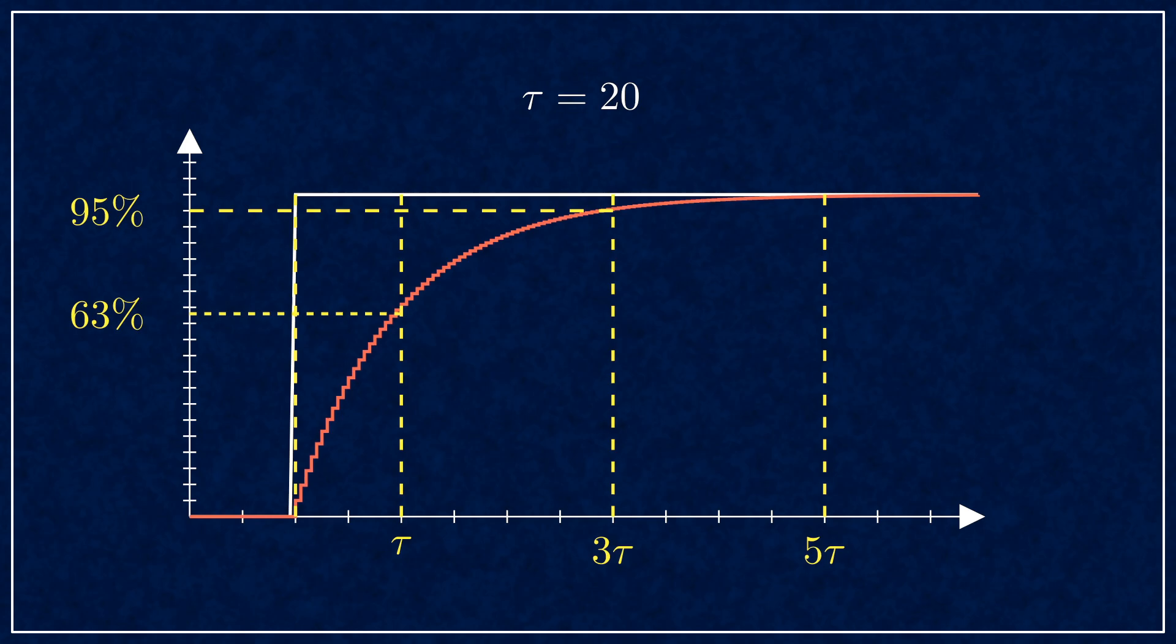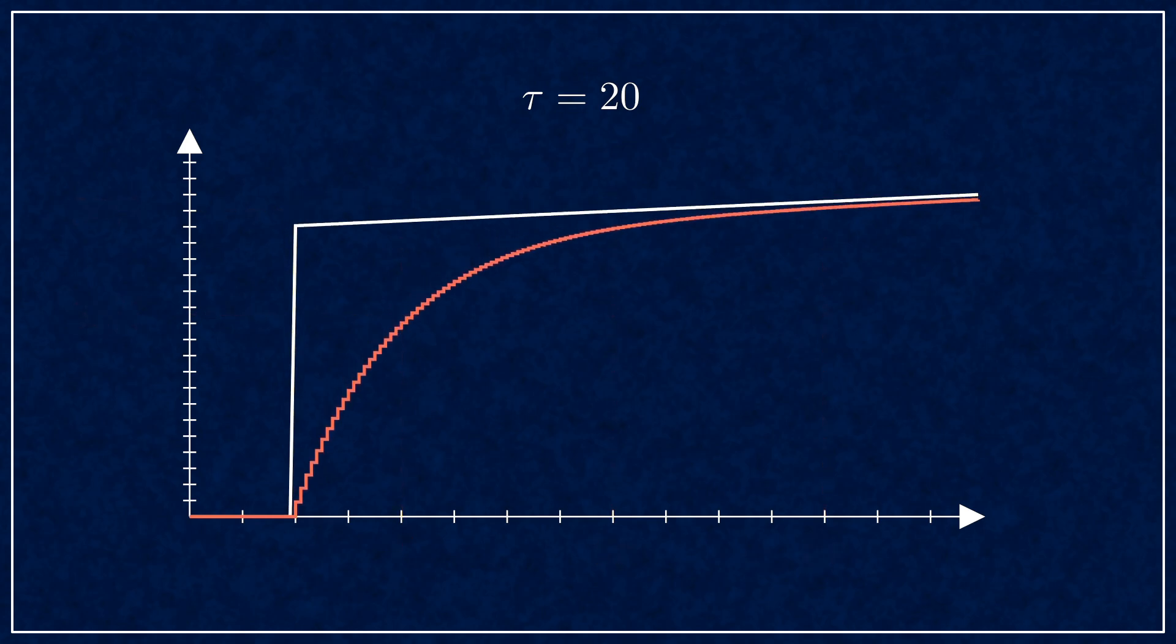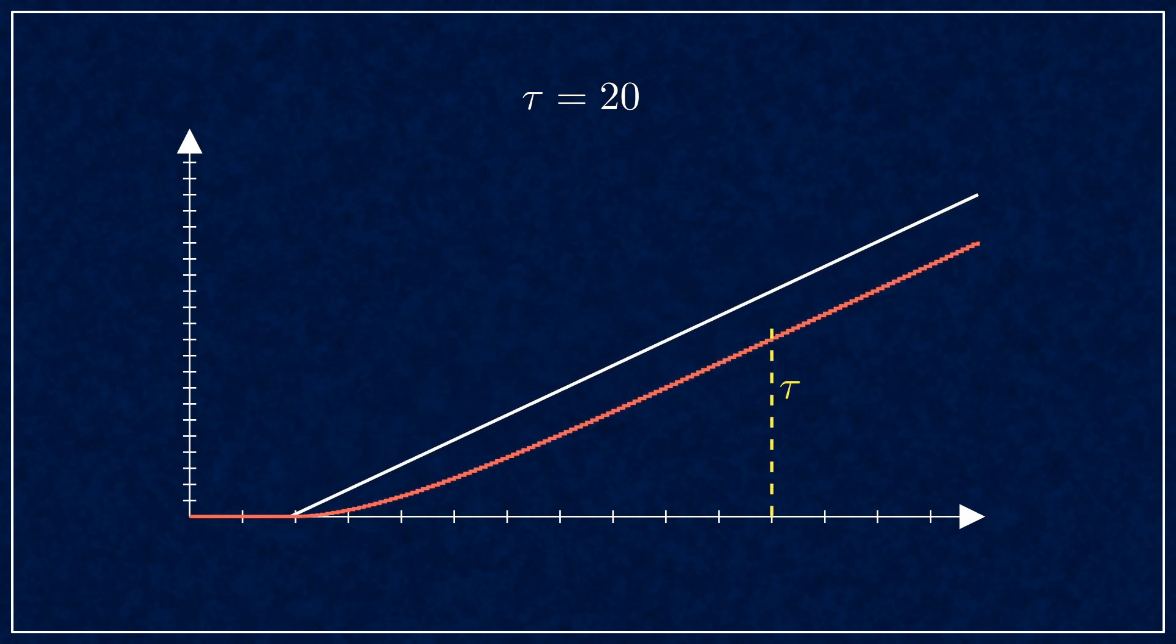If you're comparing the delay to a ramp input, it will be one time constant minus one sample. To be precise, when τ equals 1, the filter does nothing but pass through the input, so the delay must be zero for that case, hence the minus 1.